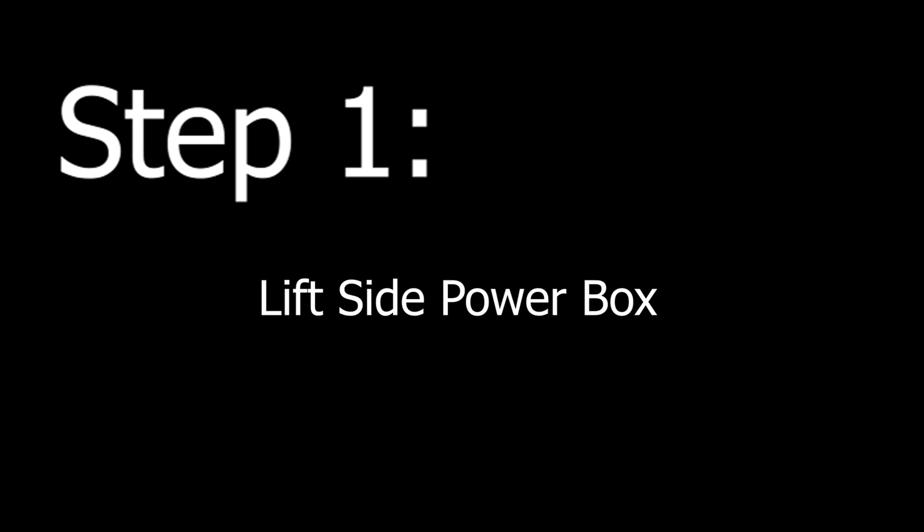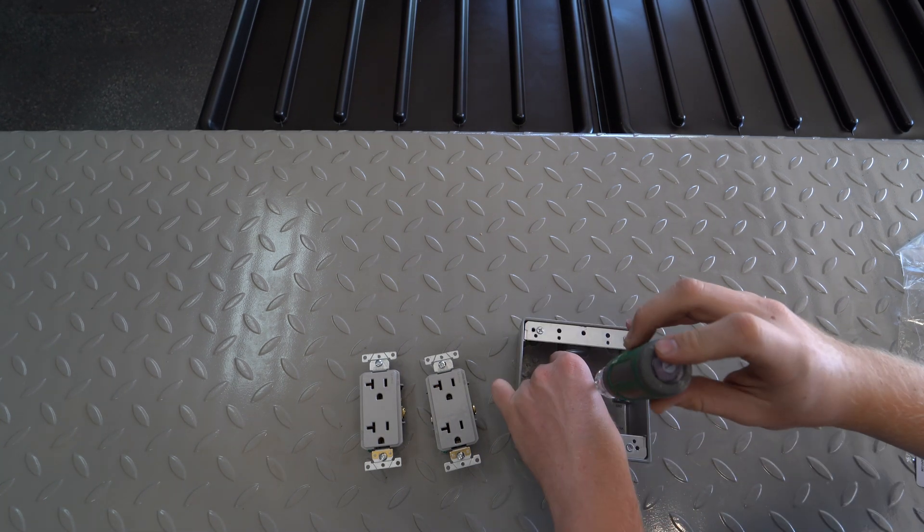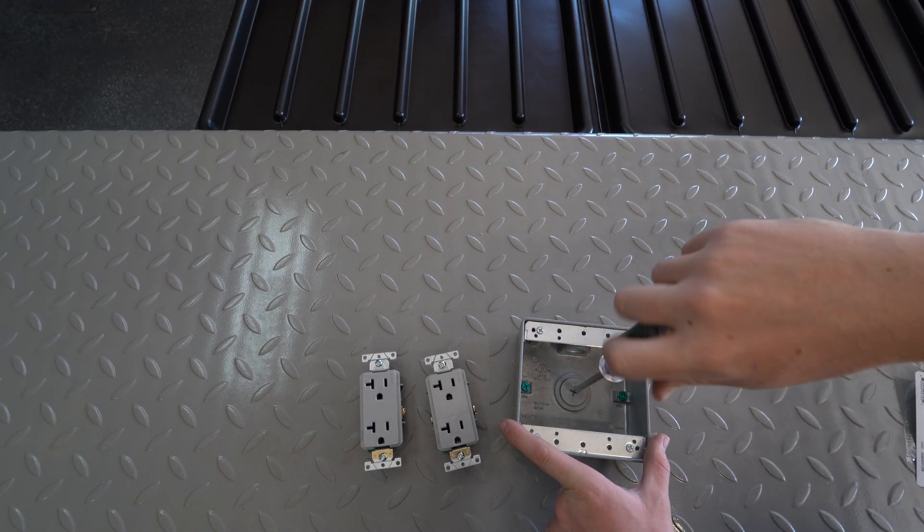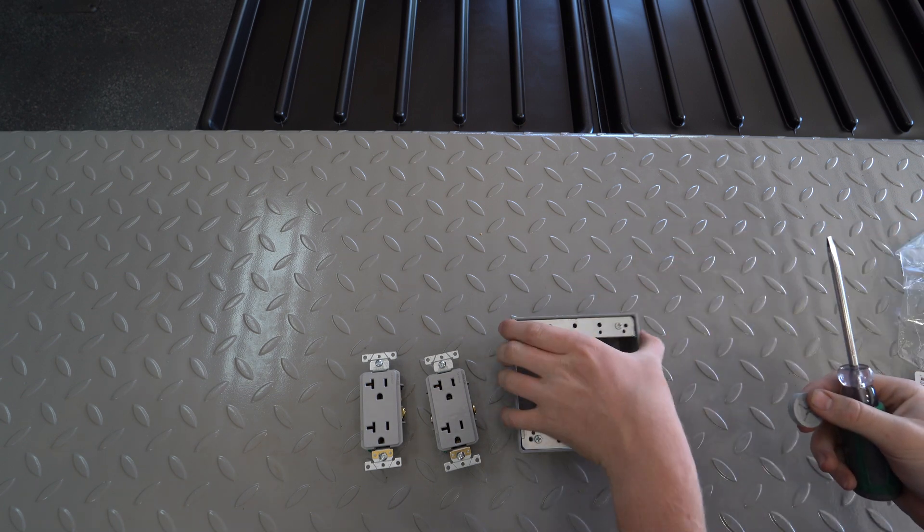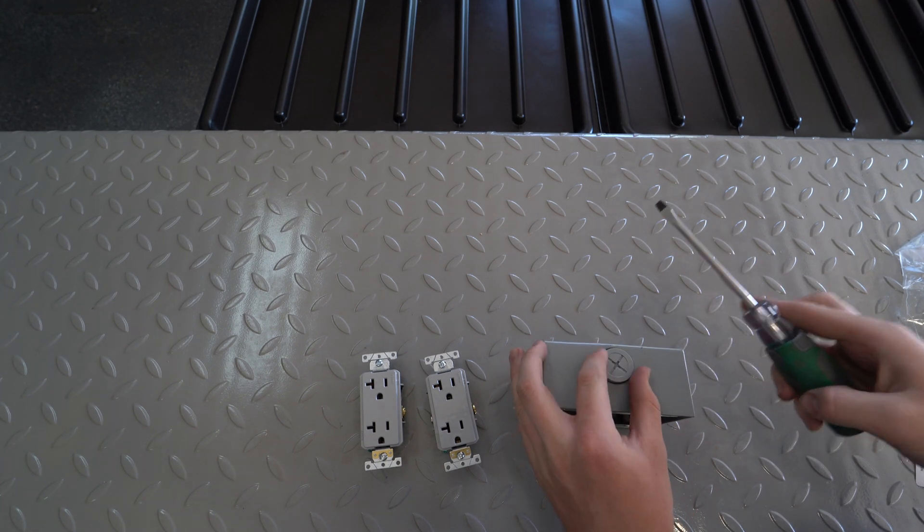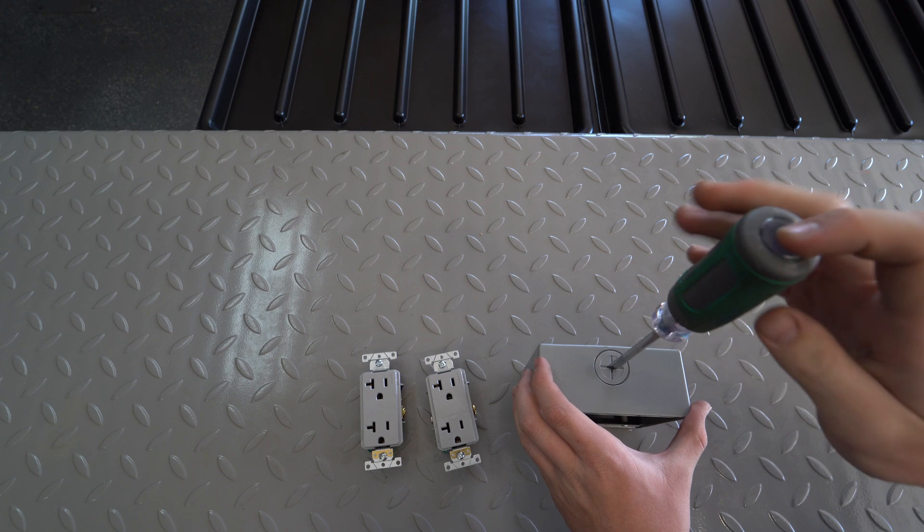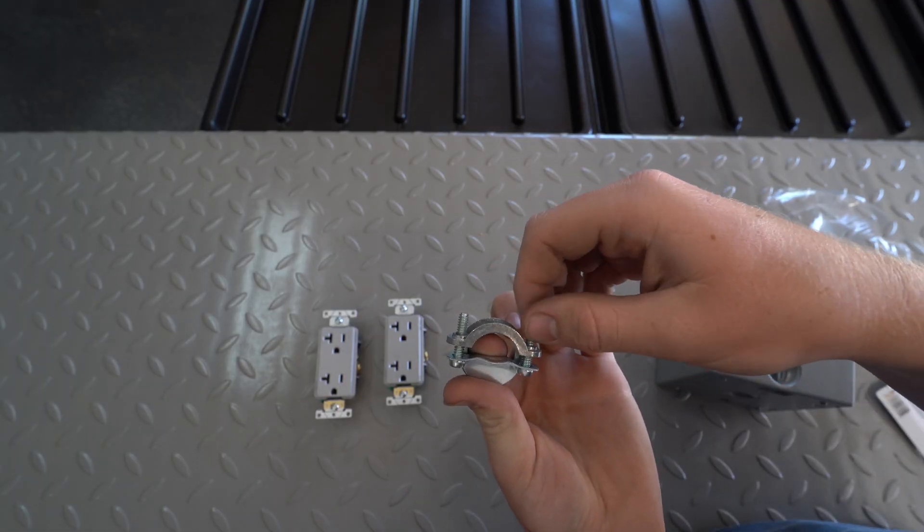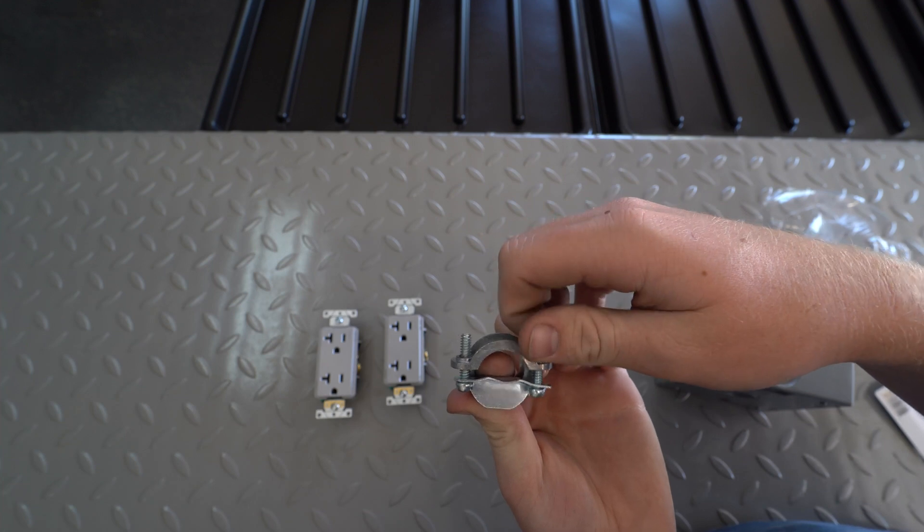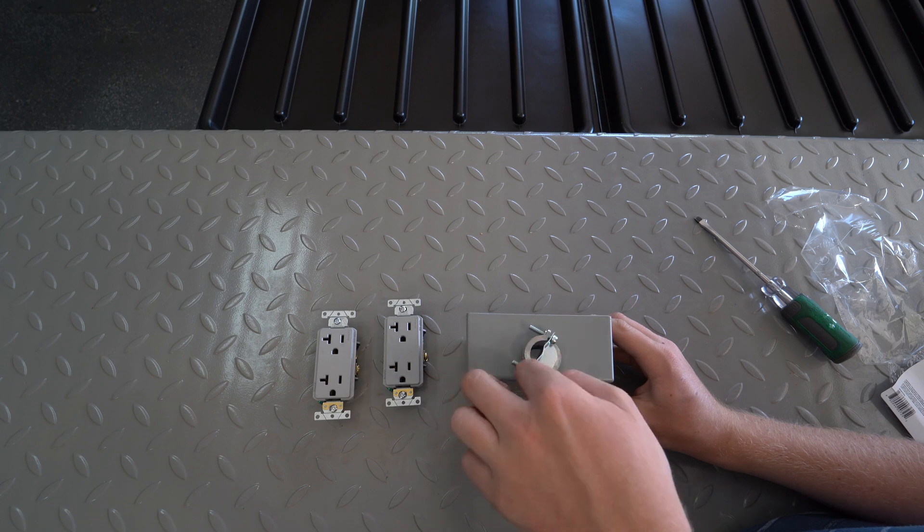We're going to start this project by building the electrical box that connects on the lift. I used a metal two-gang outlet box and I ended up capping the holes that I'm not going to use. I got this clamp which is used to hold the power wire into the electrical box so it doesn't come loose. Screw it into the open end of the electrical box.